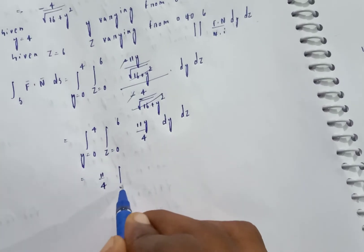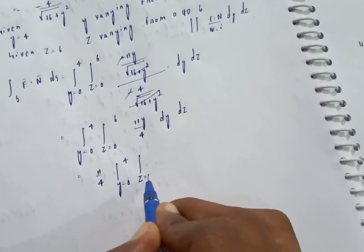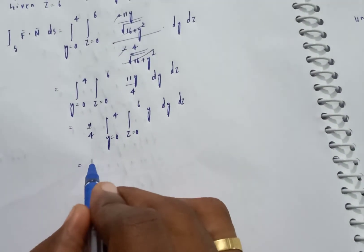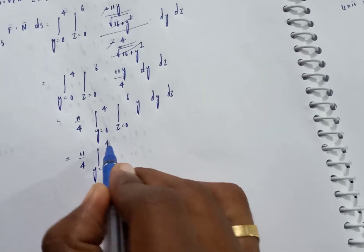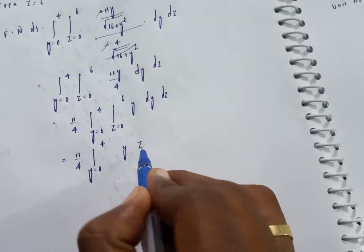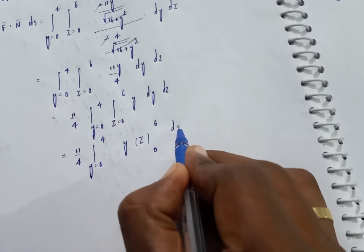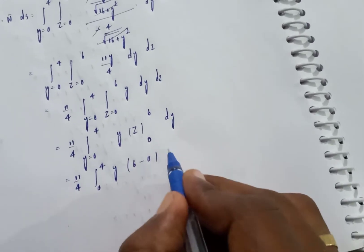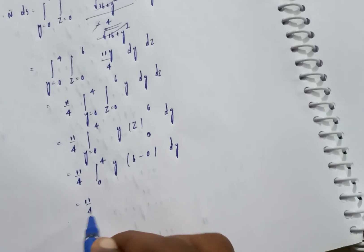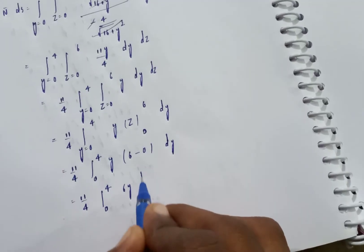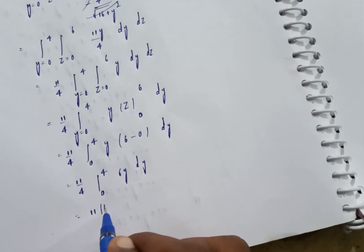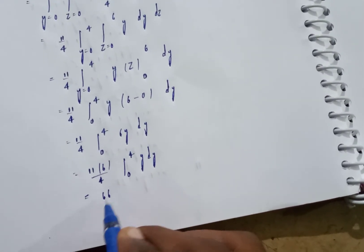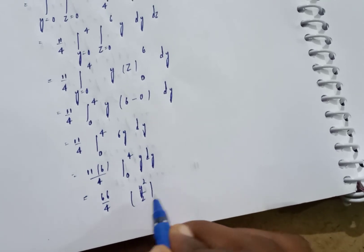Since 11/4 is constant, the integral becomes (11/4) times integral z = 0 to 6 dz times integral y = 0 to 4 of y dy. Integrating y gives y²/2 from 0 to 4, and integrating z gives 6. Result: (11/4) times 6 times [y²/2] from 0 to 4 equals (11/4) times 6 times (16/2) equals (11/4) times 6 times 8.